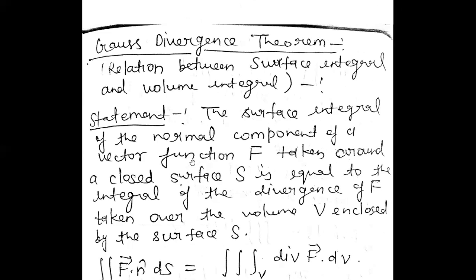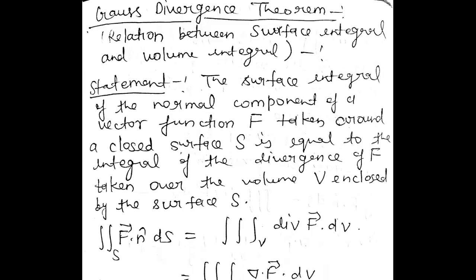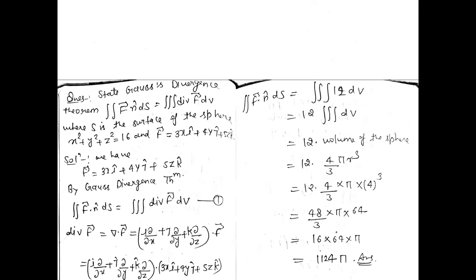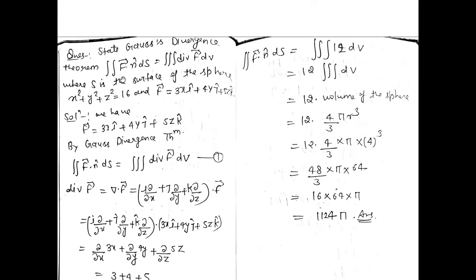The statement is: the surface integral of the normal component of a vector function f taken around a closed surface S is equal to the integral of the divergence of f taken over the volume V enclosed by surface S. So the formula is: double integration of f-vector dot n-cap dS equals triple integration of divergence of f-vector dV. This is the Gauss Divergence Theorem.